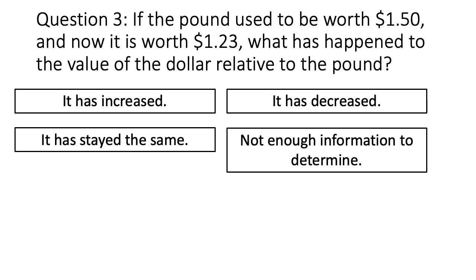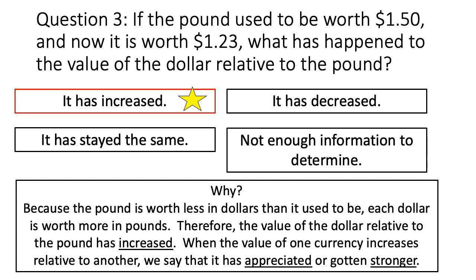If the pound used to be worth $1.50 and now it is worth $1.23, what has happened to the value of the dollar relative to the pound? The answer is that the value of the dollar has increased relative to the pound. Because the pound is worth less in dollars than it used to be, each dollar is now worth more in pounds. When the value of one currency increases relative to another, we say that that currency has appreciated or gotten stronger.